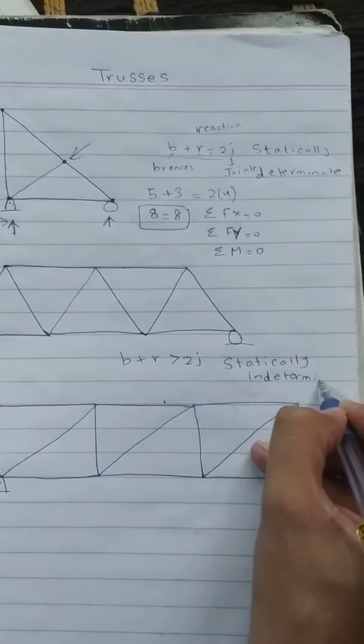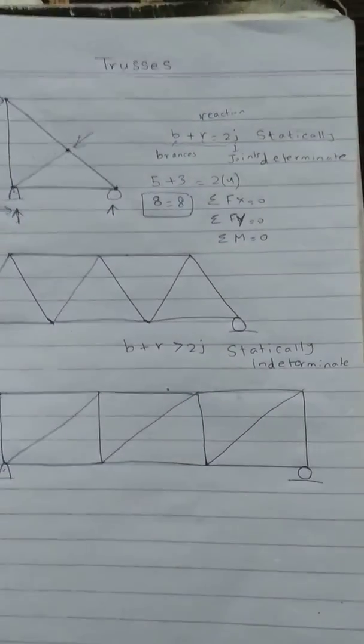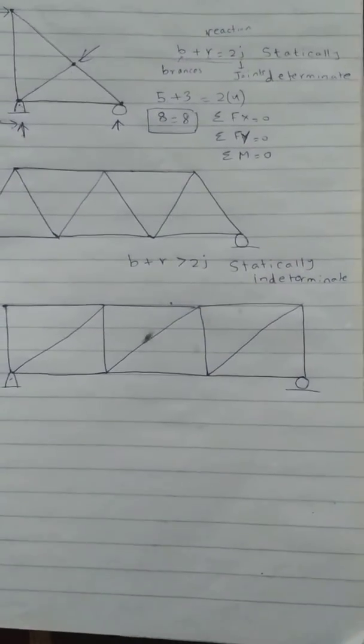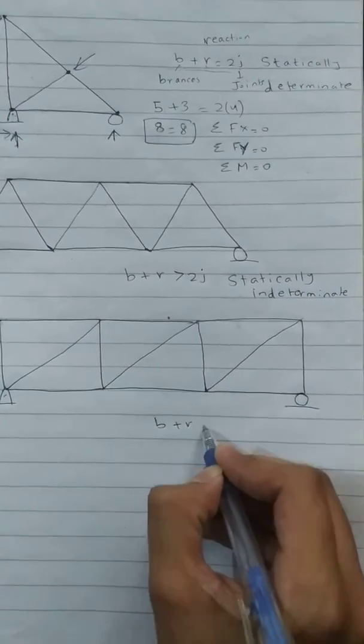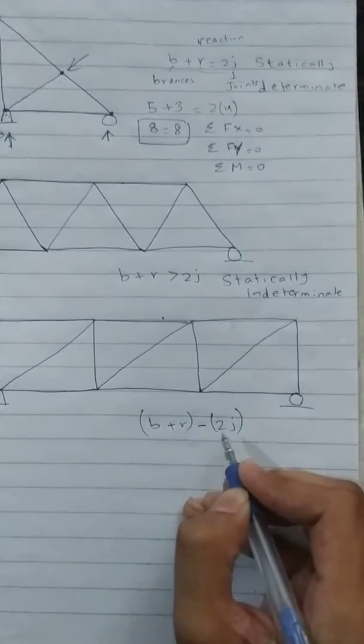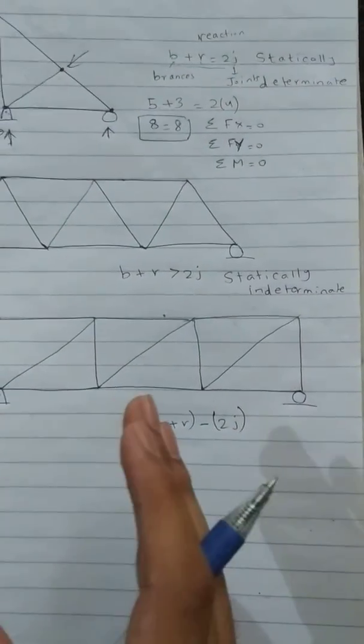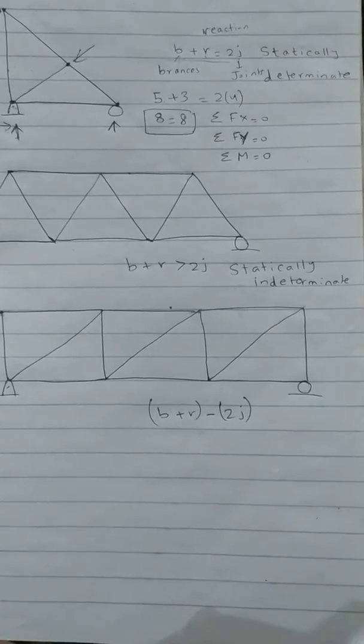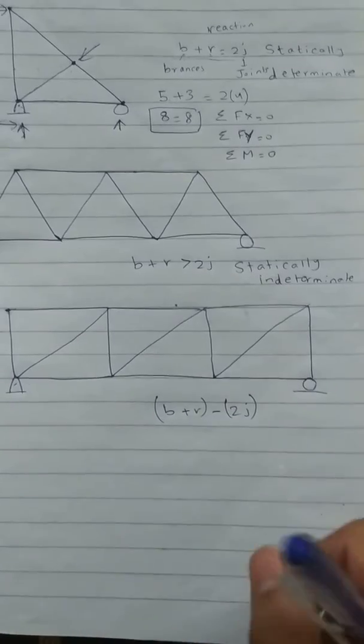We would have to follow some other methods to solve that type of truss, and that will depend upon its degree of indeterminacy. Degree of indeterminacy can be checked by b + r - 2j. Depending upon that degree of indeterminacy, we will make some assumptions. For example, if degree of indeterminacy is one, there will be one assumption required to solve that truss. If degree of indeterminacy is two, then two assumptions will be required.